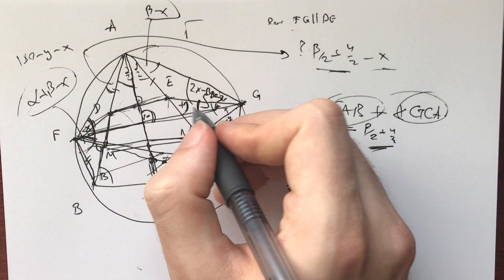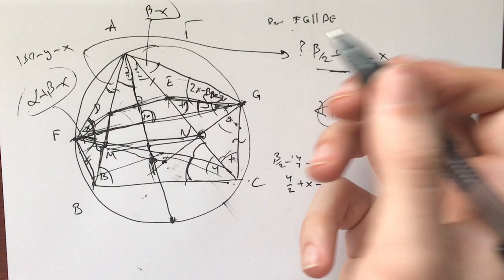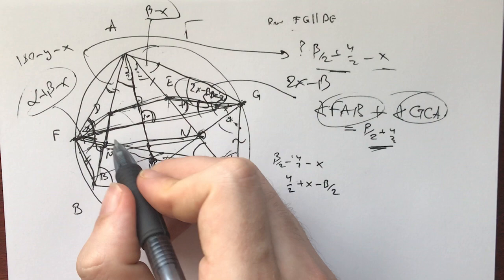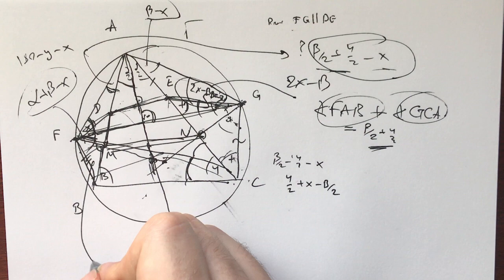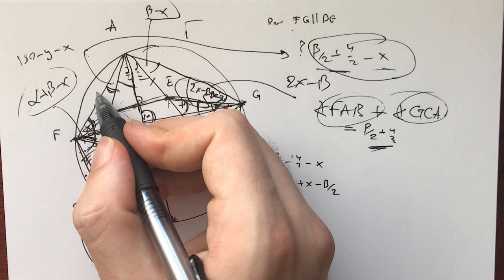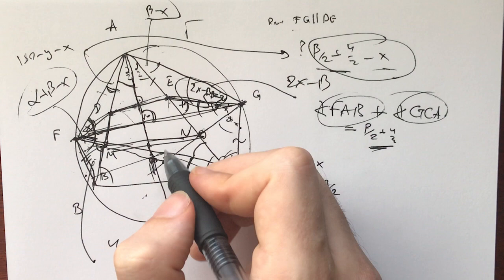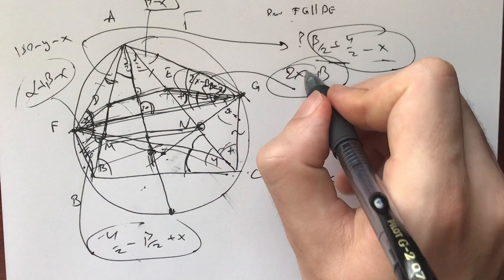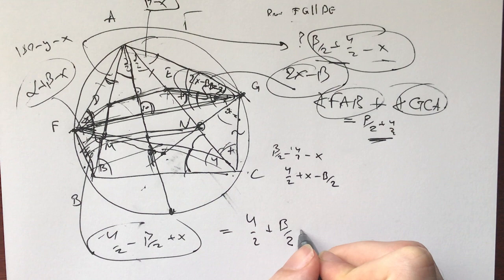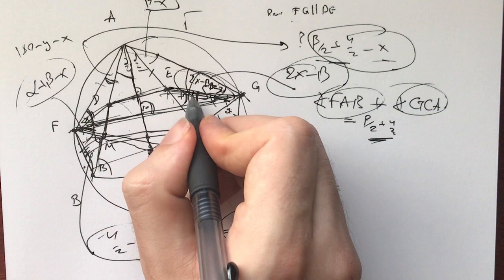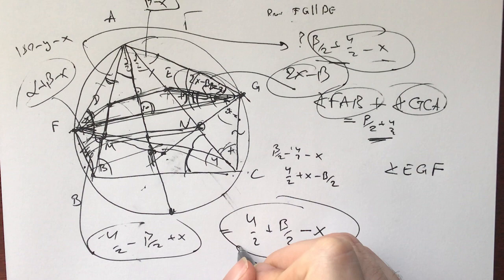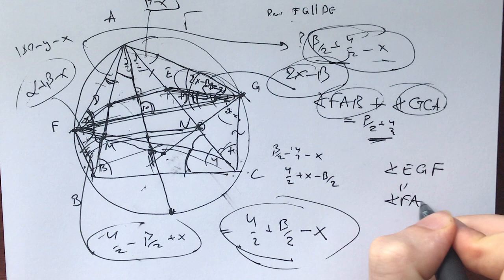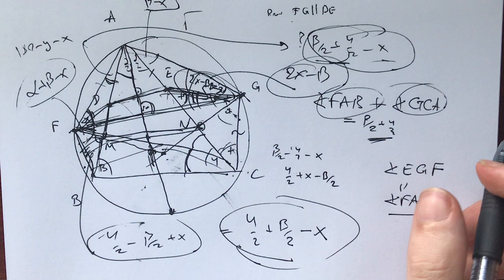Let's actually calculate this. This is 2X minus beta. If everything was true, this angle right here would be what? This whole angle is gamma half plus beta half, then we have this part 2X minus beta. This minus this gives us gamma half plus beta half minus X. So the angle EGF will be gamma half plus beta half minus X, which would be equal to the angle FAB. Now, maybe this is something we can prove.